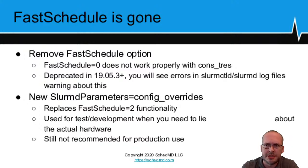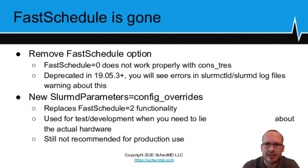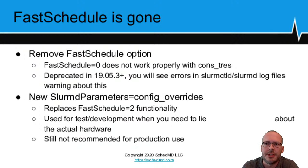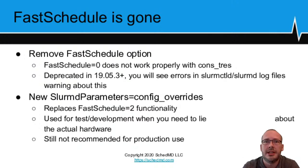We made the change so that accounting reflects that a job is blocking and using up access to everything in the node, not just the CPUs and optionally the memory. We also removed the long-misunderstood FastSchedule option. FastSchedule had only a vague impact on scheduler performance and had a confusing set of options 0, 1, and 2. FastSchedule 2 did not actually make anything faster — it just let you lie to Slurm about the actual hardware configuration. The FastSchedule 2 behavior, if you're setting up a test and development environment, does remain but has moved to the slurmd parameter config overrides option.